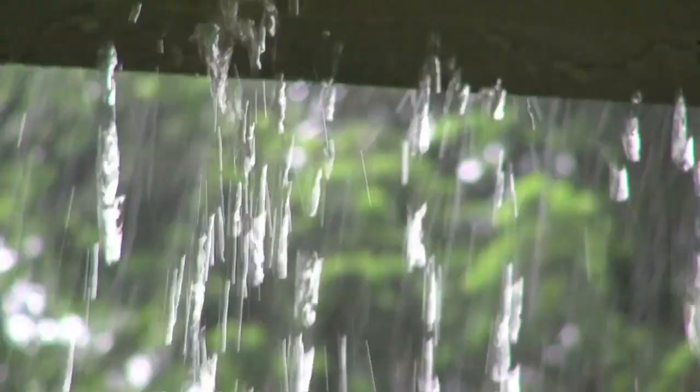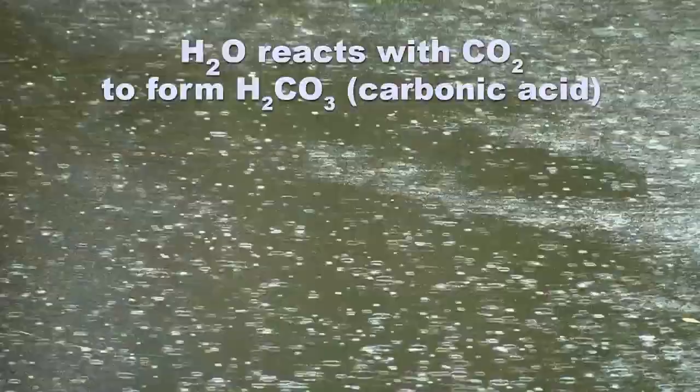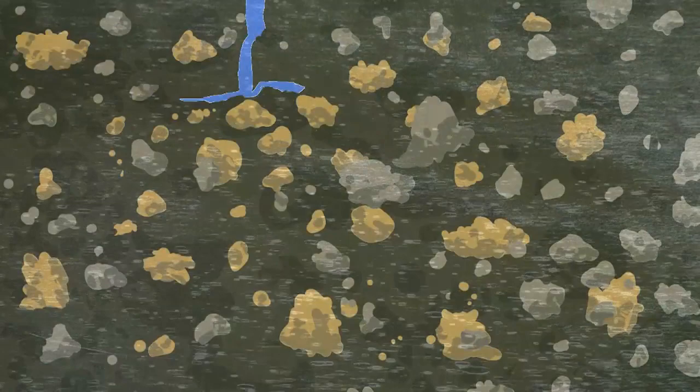So when it rains, you've got a water drop going through the atmosphere. It's going to mix with the carbon dioxide and make a very weak acid called carbonic acid. When that weak acid hits the ground surface and it starts soaking in, it can actually start dissolving the rock.